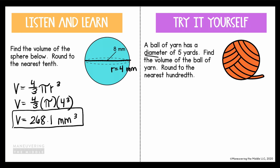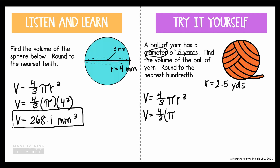Next, it says a ball of yarn has a diameter of 5 yards. Find the volume of the ball of yarn, rounded to the nearest hundredth. Right away, we see they gave us the diameter, but our formula needs the radius. If the diameter is 5 yards, half of 5 is 2.5, so that's what we'll use for the radius. Writing out the formula and substituting: 4 thirds times pi times 2.5 to the third power gives us a volume of 65.45 yards cubed.